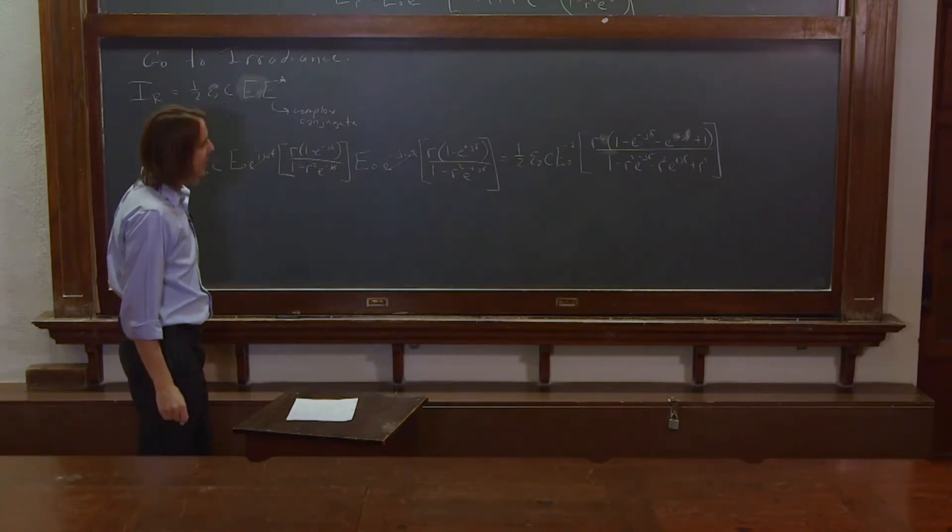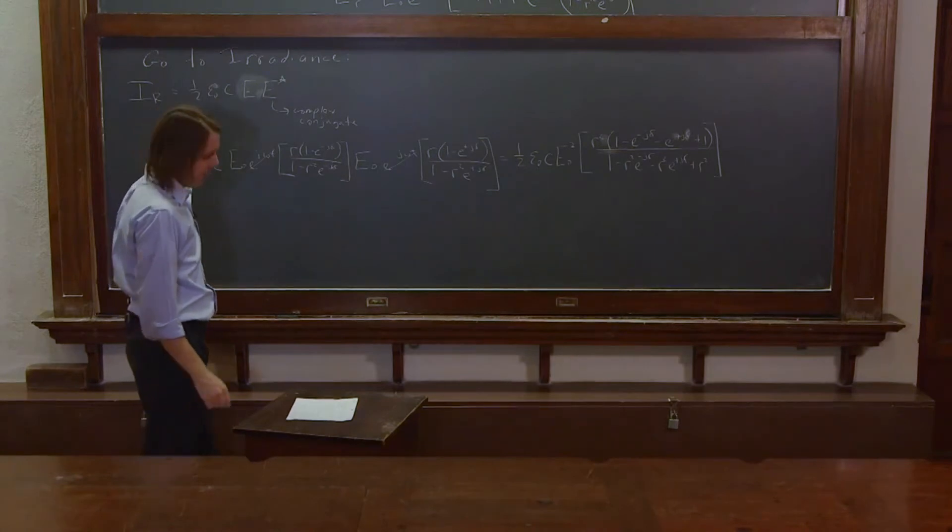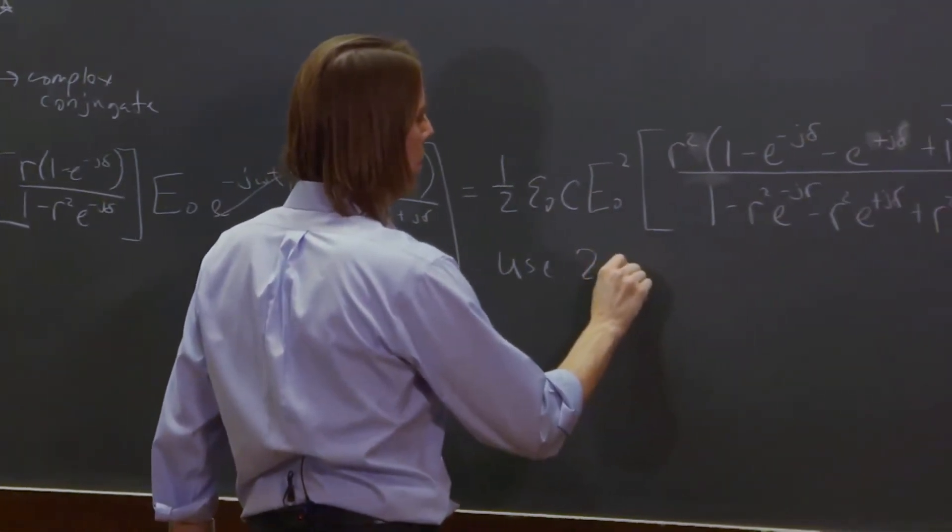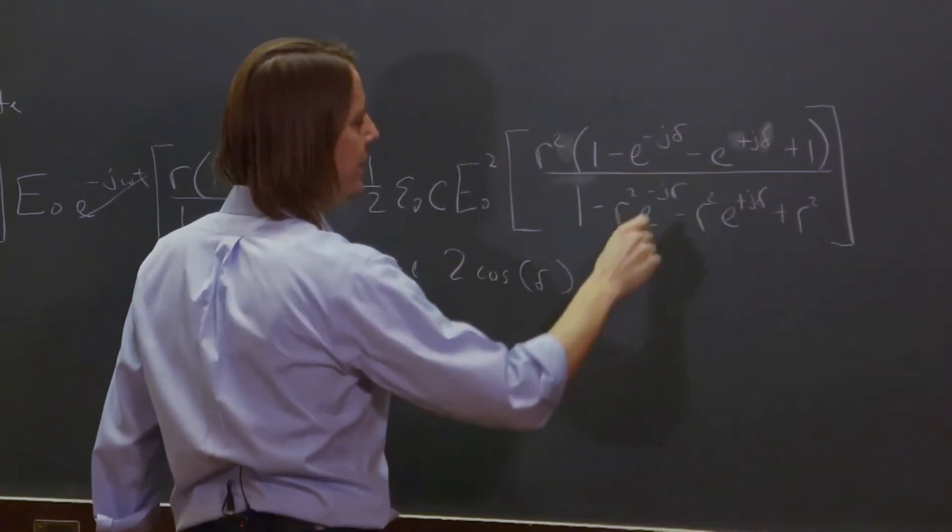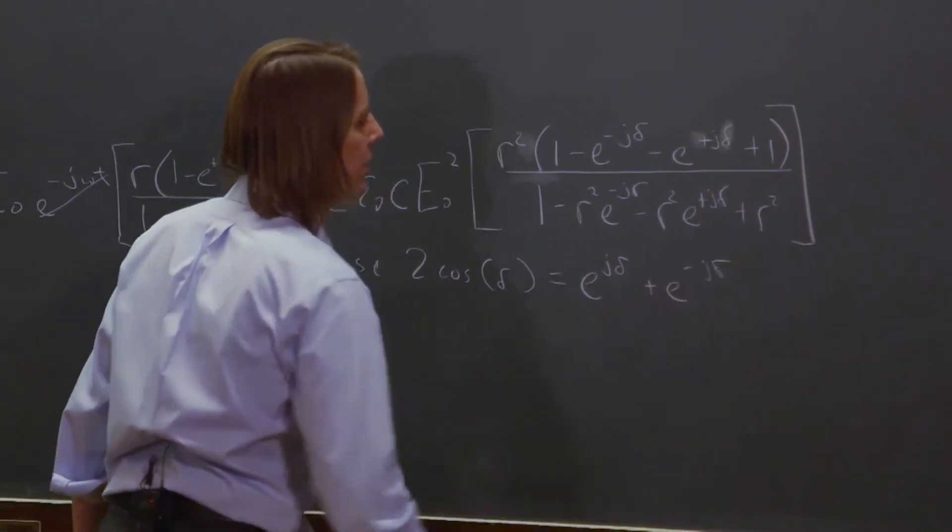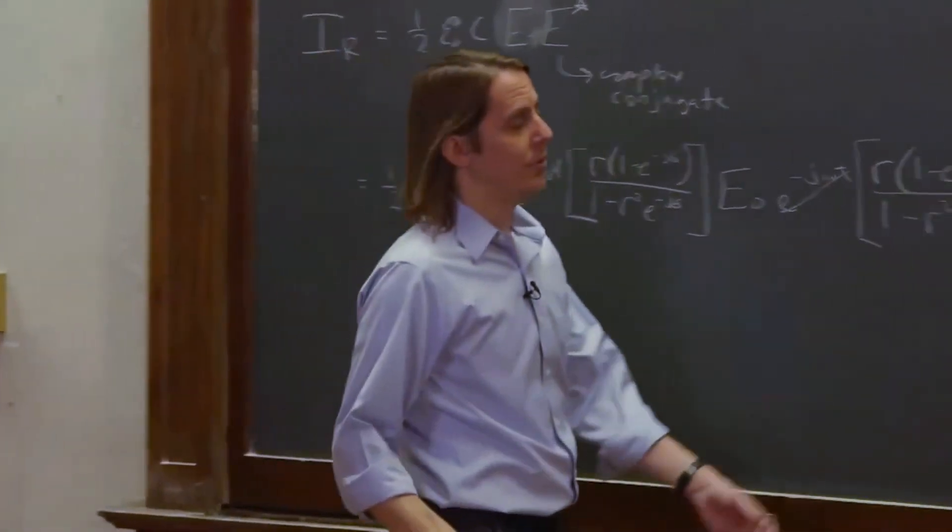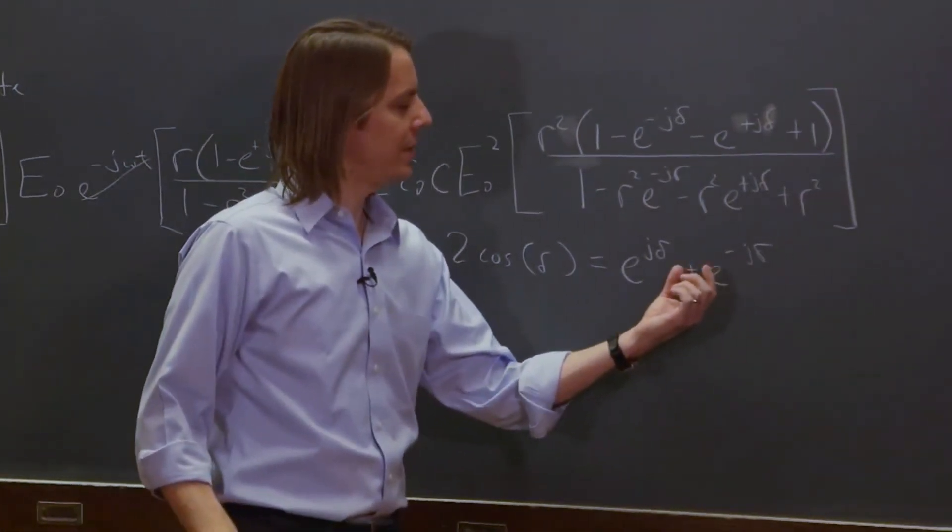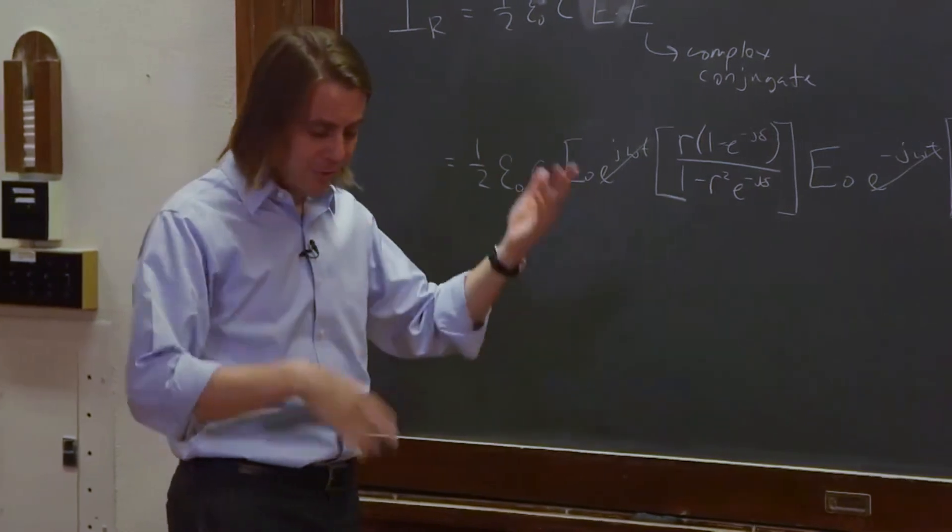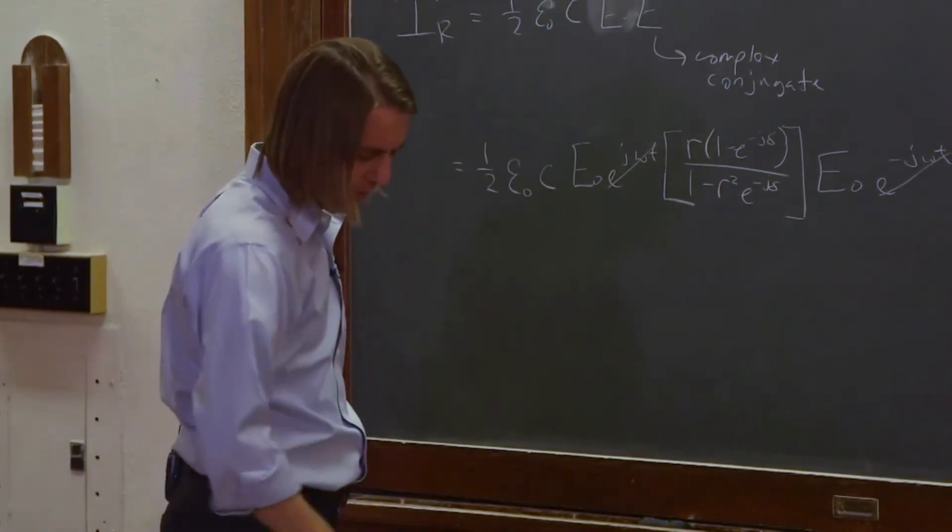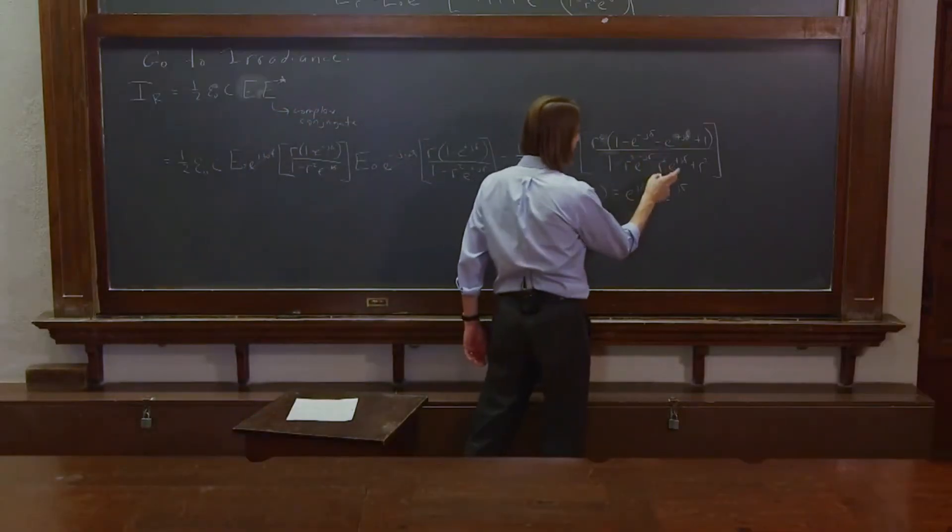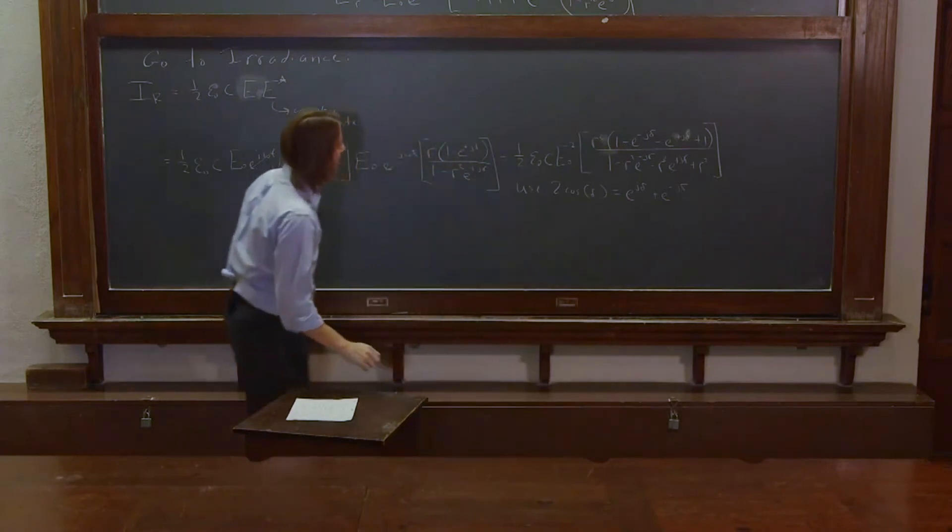Let's see. And now we are going to simplify it. We're going to use the 2 cosine delta equals E to the J delta plus E to the minus J delta. You can just get that from Euler's formula if you were to say this is cosine delta plus J sine delta. This is cosine negative delta plus J sine negative delta, and the sines and cosines are symmetric or anti-symmetric, and it all makes that. All right. So if we were to use that to get rid of things like this and that, then what do we end up with?